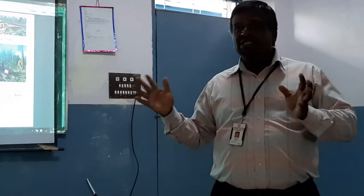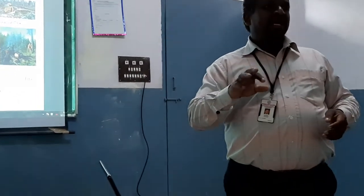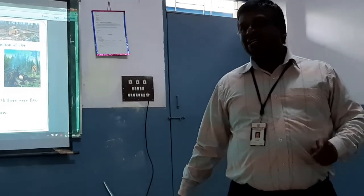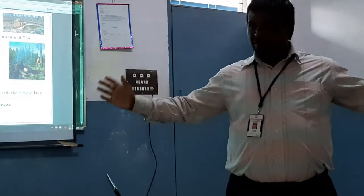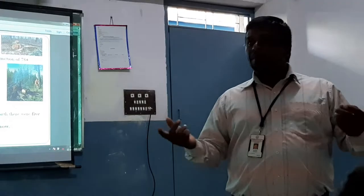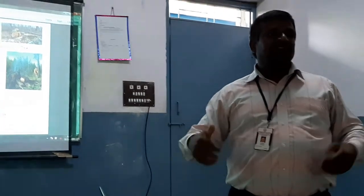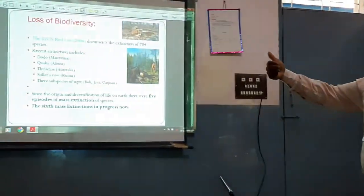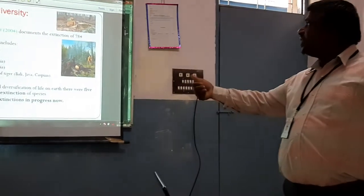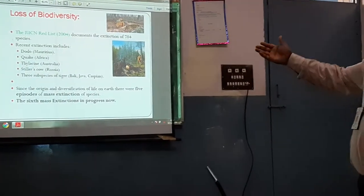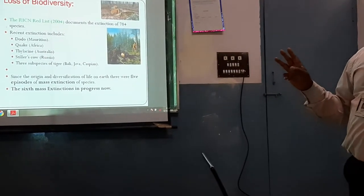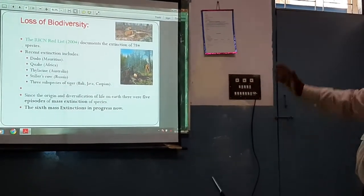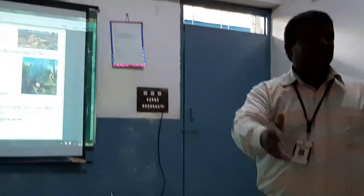Because of the disappearance of the Dodo bird, you now find fewer of those trees. Even though by artificial methods we can soften the seeds and make them grow, there is no natural agent to do that. You can find stuffed Dodo birds in the British Museum. Extinct is the opposite of extant — something which is existing is extant, while extinct means completely disappeared. The Dodo bird from Mauritius is one such example. Other examples include the quagga in Africa, the thylacine in Australia, and the Steller's sea cow in Russia. Three subspecies of tiger — the Bali tiger, Java tiger, and Caspian tiger — have completely become extinct.